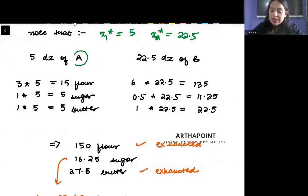Each unit of cake A was using 3 kg of flour. I am producing 5 units of cake A, so it will use 15 kg of flour. Each unit of cake B was using 6 kg of flour. I am producing 22.5 units of cake B, so it will use 135 kg of flour. Cake A is using 15 kg of flour. Cake B is using 135 kg of flour. So in total, I am able to use 150 kg of flour, which is completely exhausted.